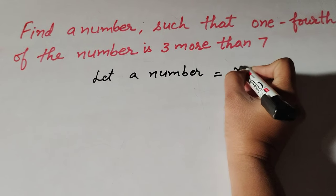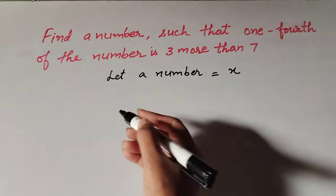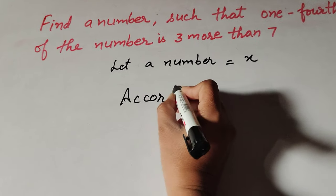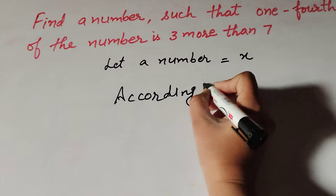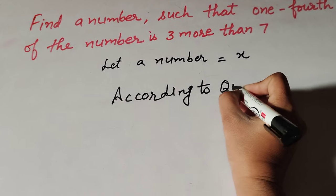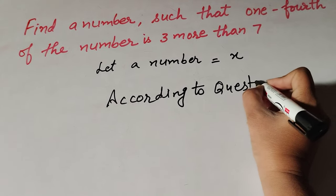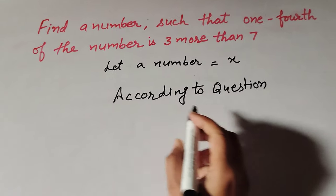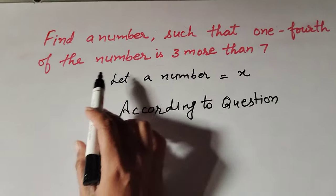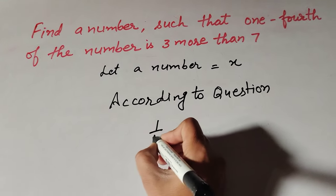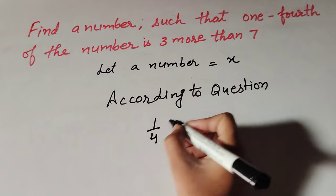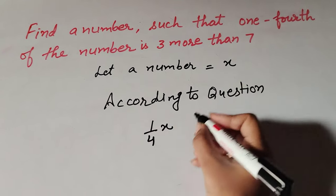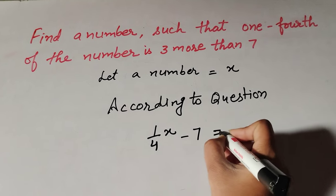Now, according to the question, one-fourth of the number—the number is x—is three more than seven. So, one-fourth x minus seven equals three.